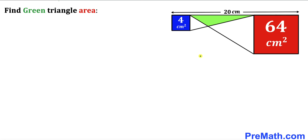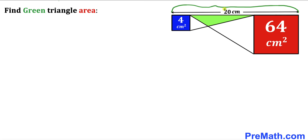Welcome to pre-math. In this video we have a square and a green triangle put together, as shown in this diagram, such that the area of the blue square is 4 cm², the area of the red square is 64 cm², and this horizontal distance is 20 cm. Our task is to calculate the area of this green shaded triangle.